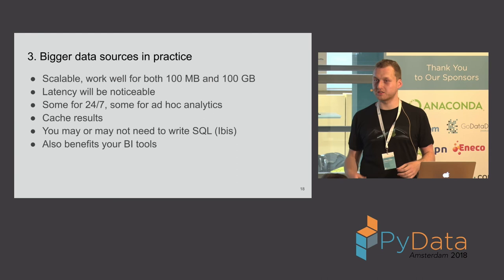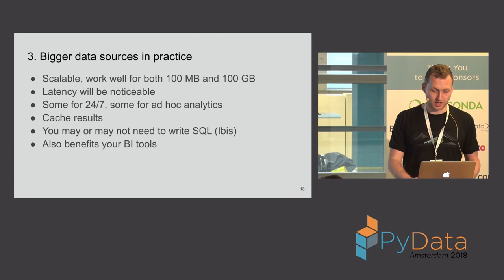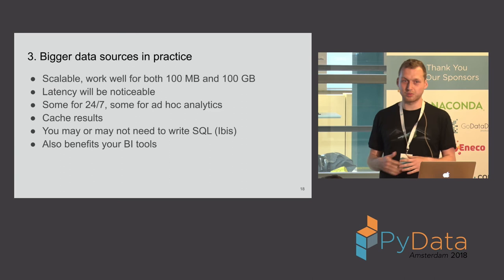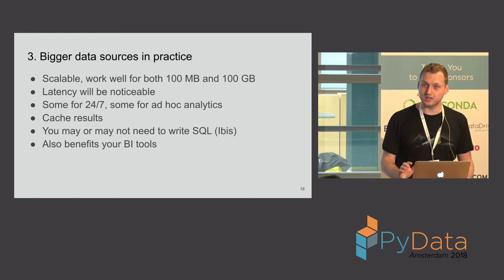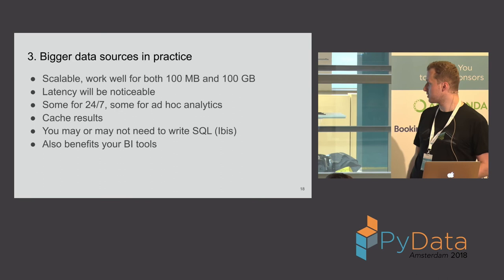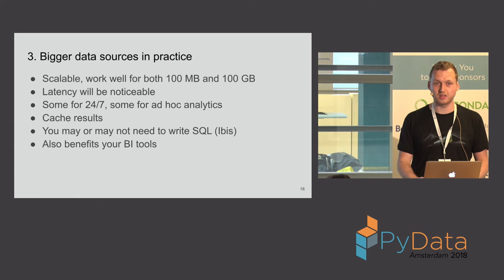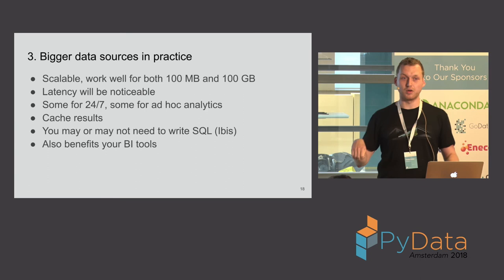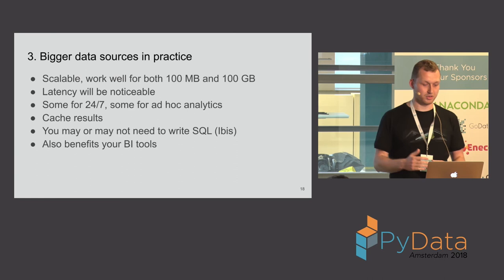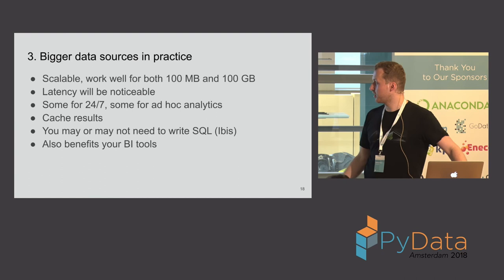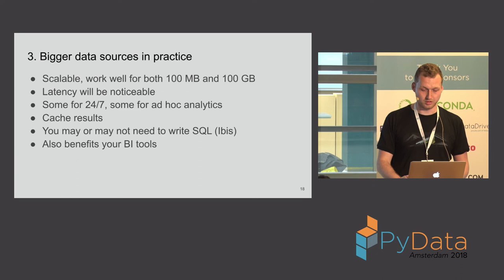The great thing is it works for a 100 megabyte dataset similarly to a 100 gigabyte dataset or even beyond in the case of Redshift and Snowflake. But the latency will be noticeable. If you're used to Pandas returning results in 100–200 milliseconds, that's not something you're going to get here — the latency is going to be in seconds. The pricing models differ: some solutions are for 24/7 runtime, some are for ad hoc analytics. Cache your results so you don't have to query the database all the time. And while I said you need to run SQL, there's actually IBIS from Wes McKinney, which tries to blend the two together — you tell IBIS your data source and it translates Pandas-style API calls into SQL and executes on your behalf. If you set up a data solution like this, it also benefits BI tools like Tableau.